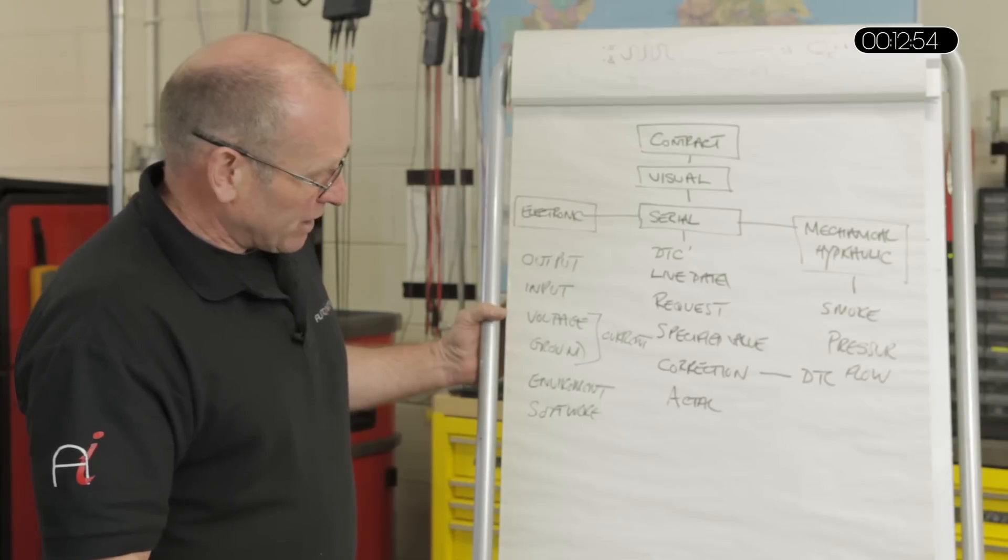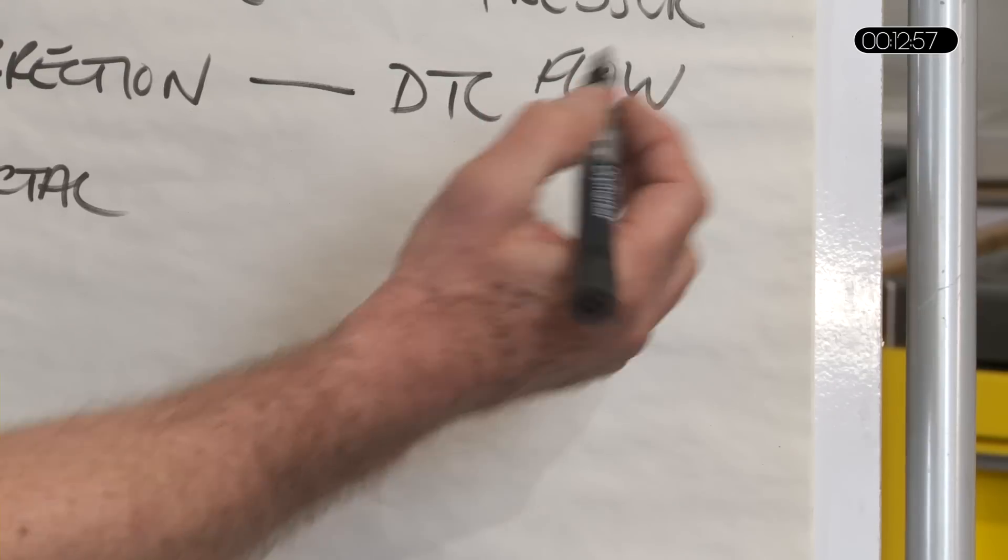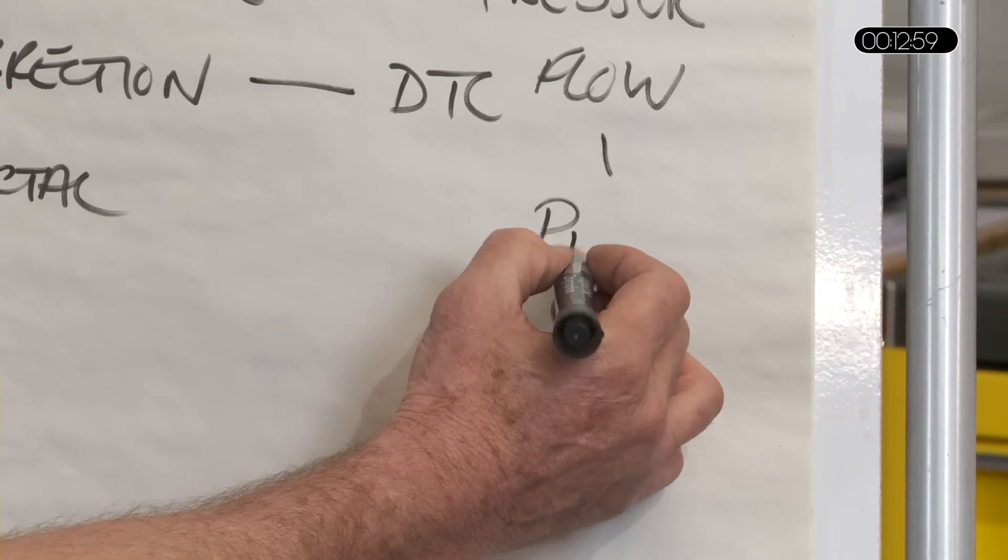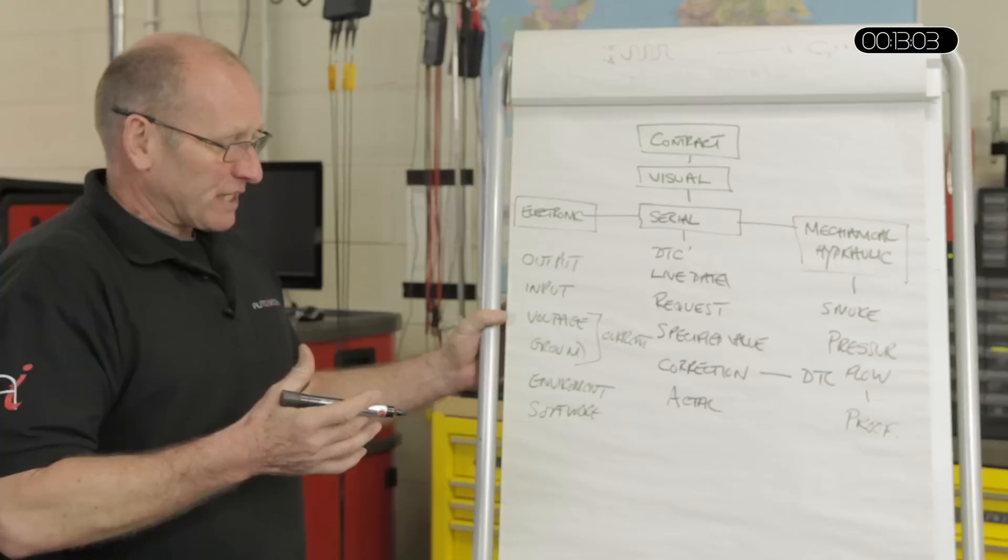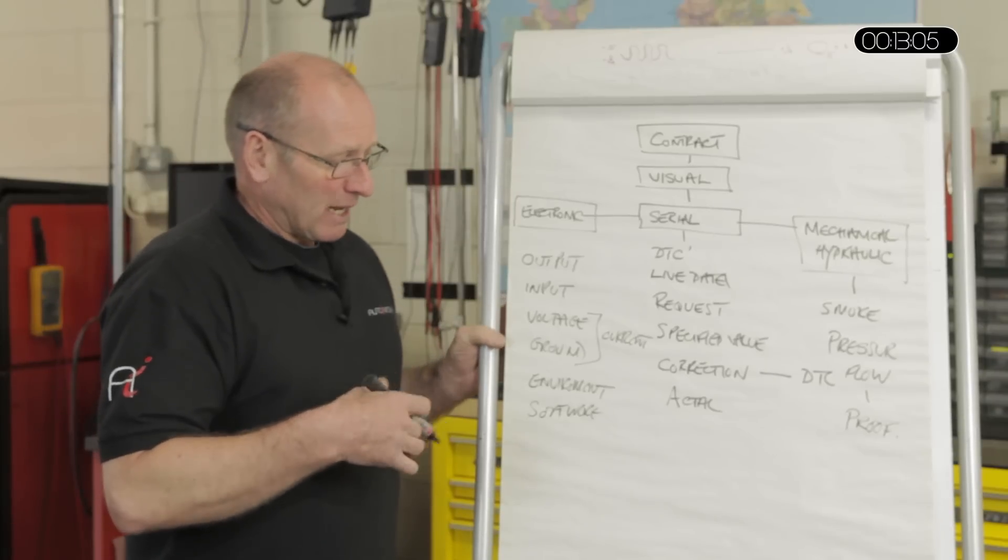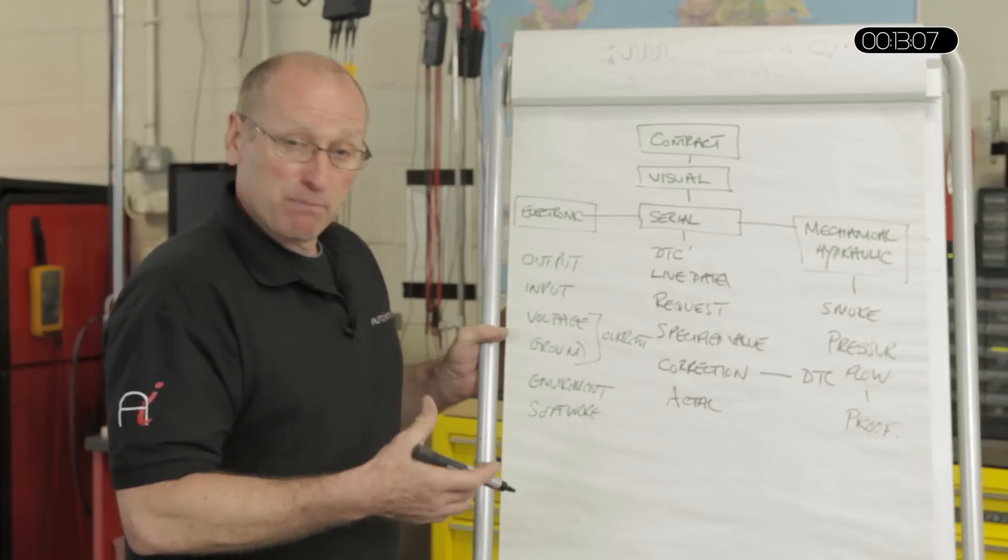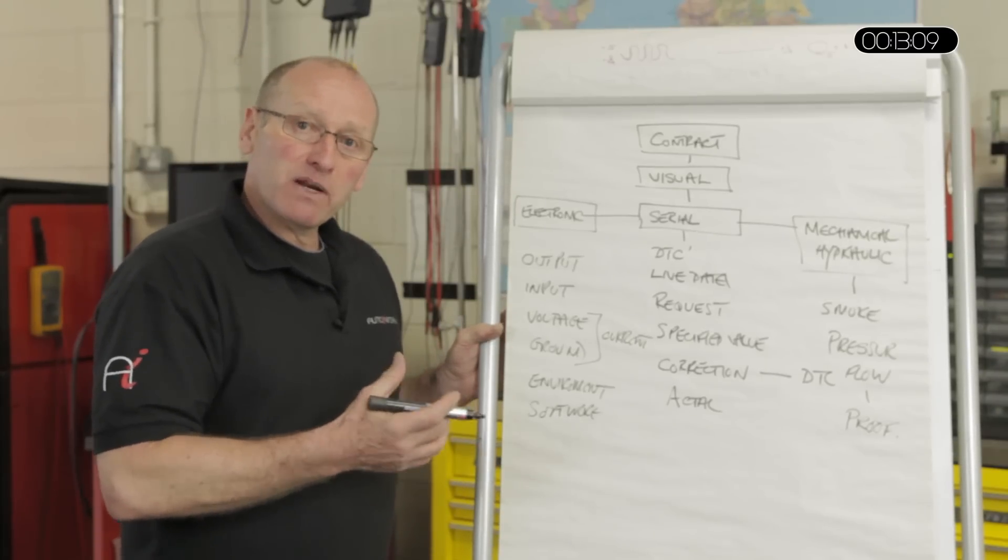In terms of common rail, perhaps, we then do what we call a proof test. Now a proof test, effectively, is if we're dealing with a hydraulic pump, can we drive that pump to a higher pressure? If we do, do we get the right response? Does the pressure increase? And of course, if we increase physical load, then the current will increase.